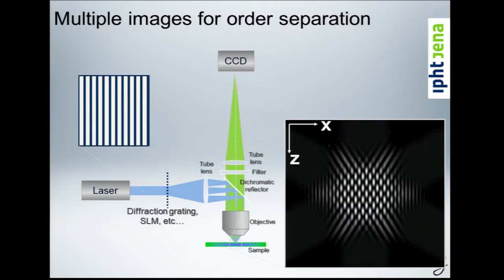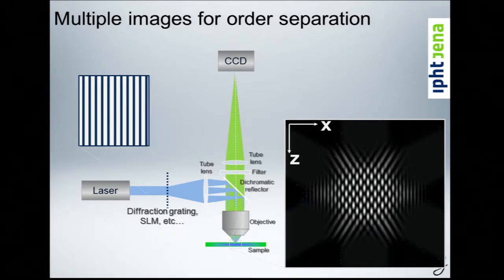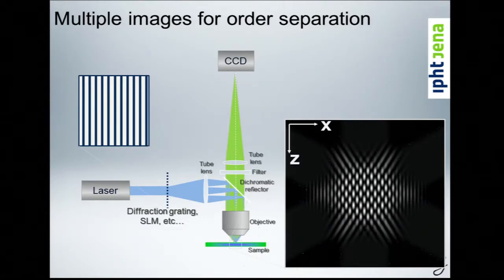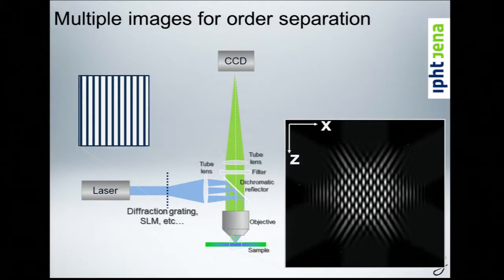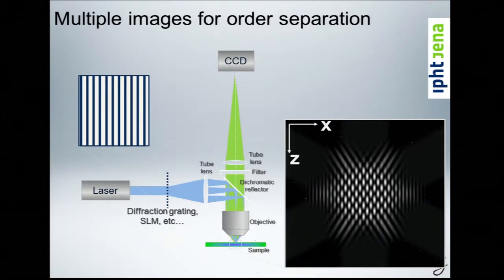With this three-beam interference you have five orders in 2D instead of three, so you need to take five images instead of three. Since they are different phase positions, it's a simple shift — the same math applies, just with a slightly bigger matrix.